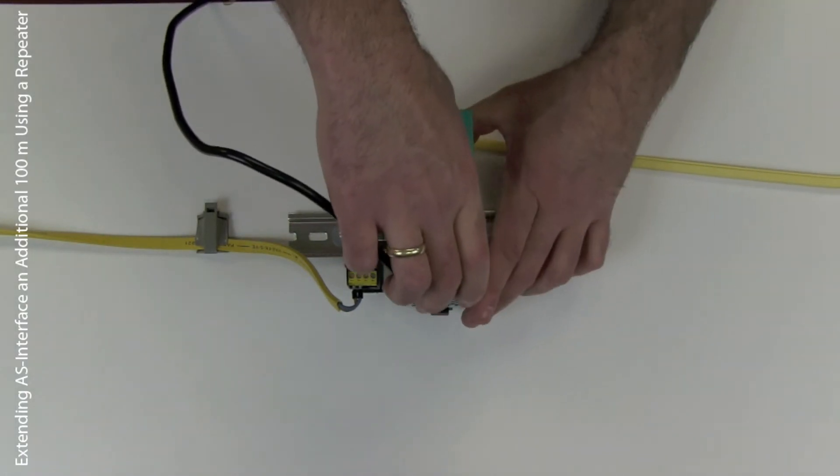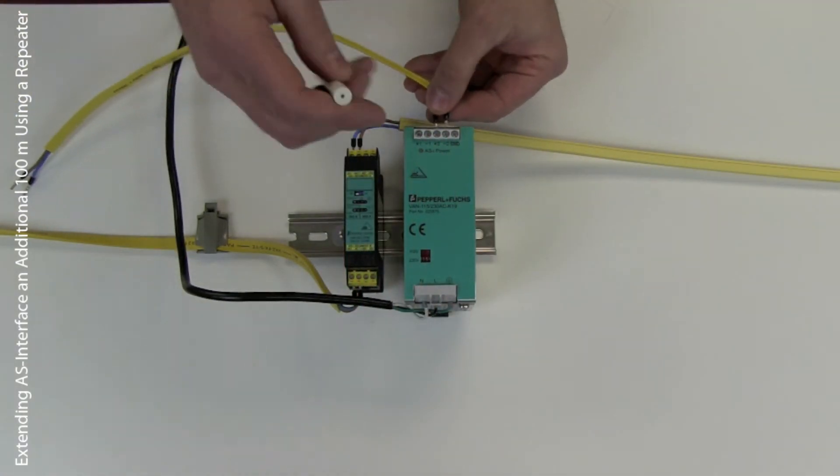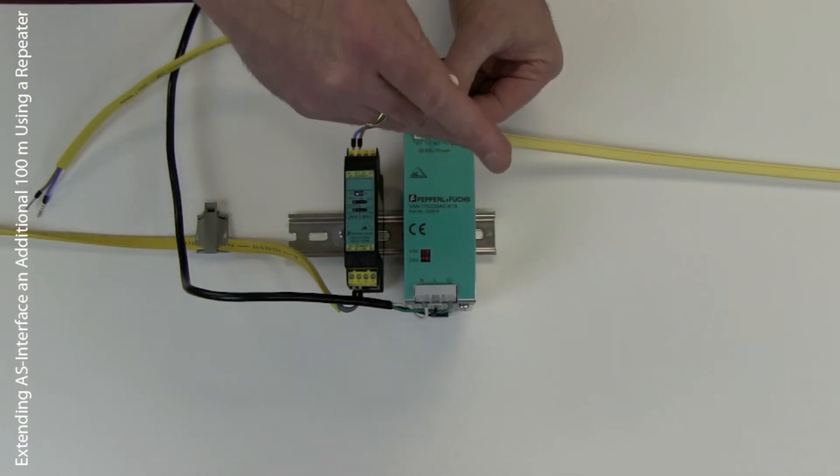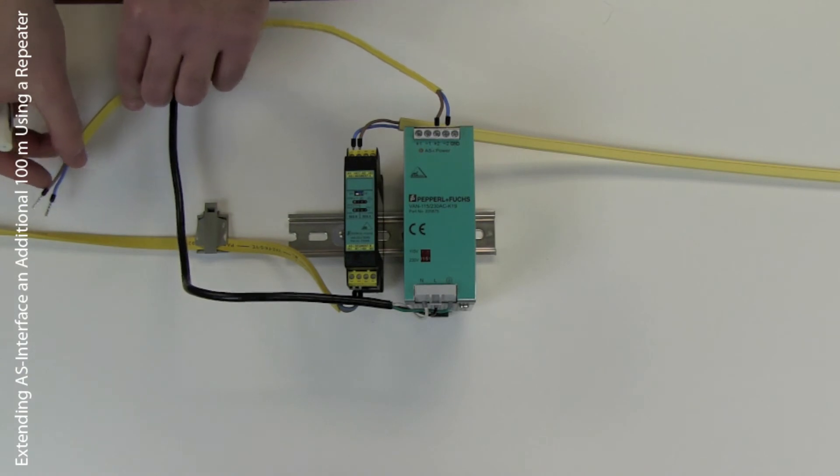So now that we have both segments attached to the repeater, let's add the power supply. Remember, there has to be a power supply in each segment. So in this case, we have one back at the master and then one right next to the repeater that will power up the second side of the network.